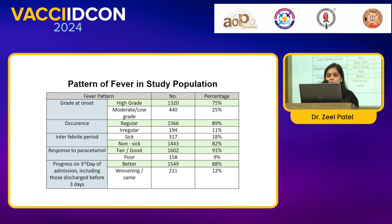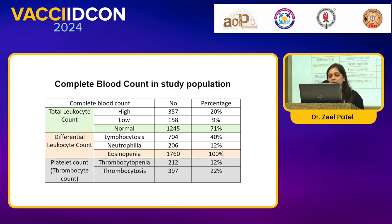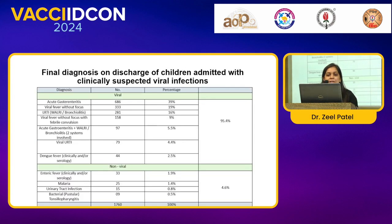The patient was not worsening on day 3. The CBC in this study population showed a normal leukocyte count in 71% of patients, with eosinopenia seen in 100% of patients, and platelet count was not commentable since 12% showed thrombocytopenia and 22% showed thrombocytosis. The final diagnosis on discharge was 95.4% diagnosed as viral infections treated without antibiotics, and 4.6% were diagnosed with bacterial infection and treated with antibiotics.